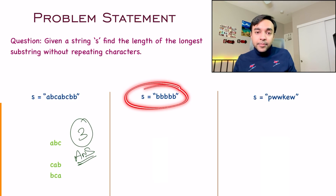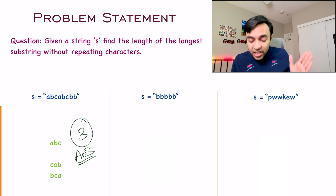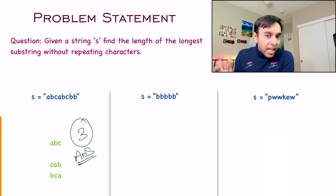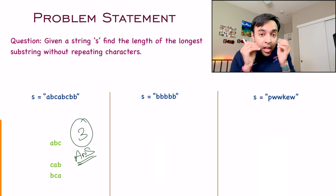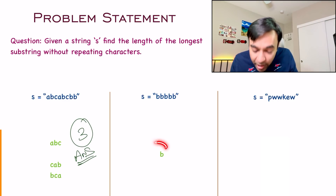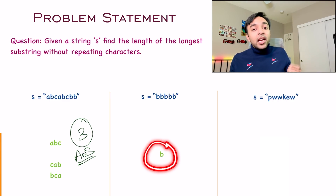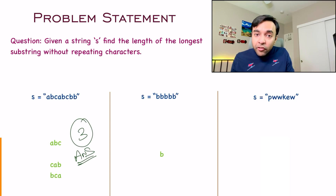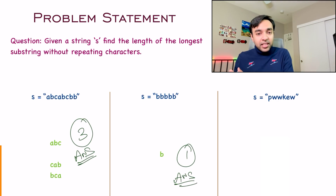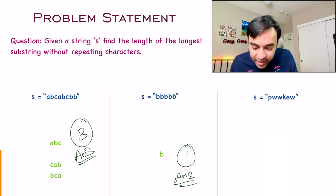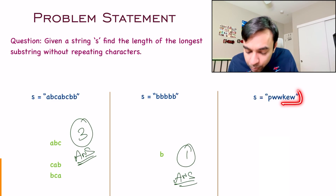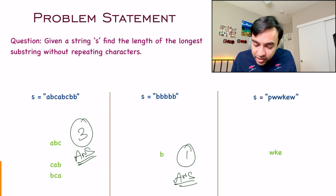Similarly, let us look at the second test case. Over here, my string just has the character B. Each B is a substring in itself, so I cannot even pick two characters. In such a scenario, my answer will be only a single character — just B. Therefore, for the second test case, my answer will be 1. For the last test case, the longest substring you can form is WKE or KEW, and once again the answer will be 3.